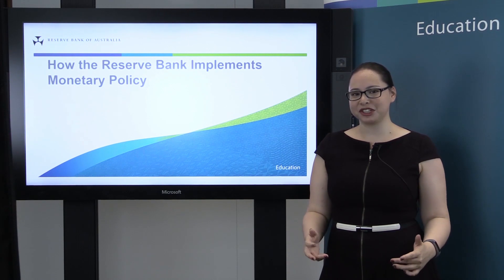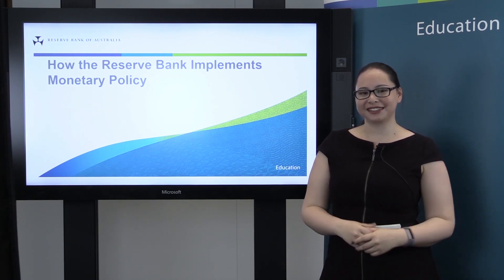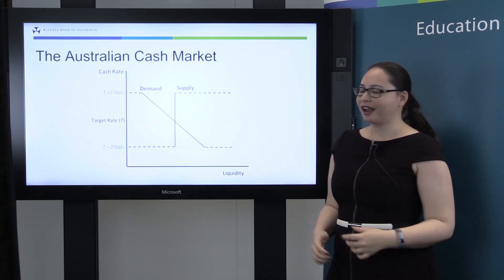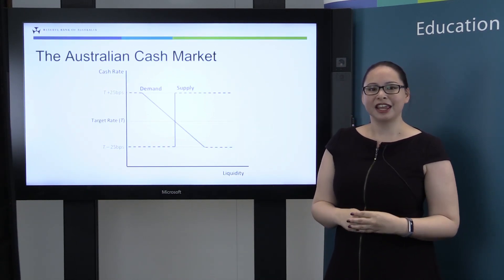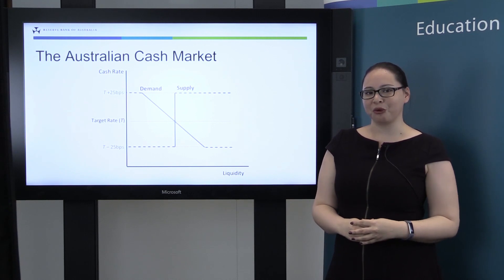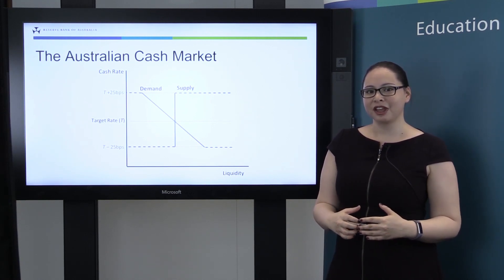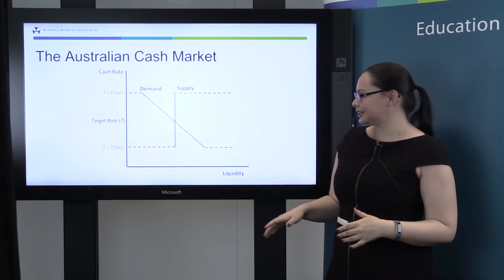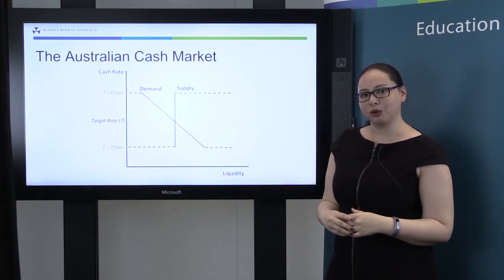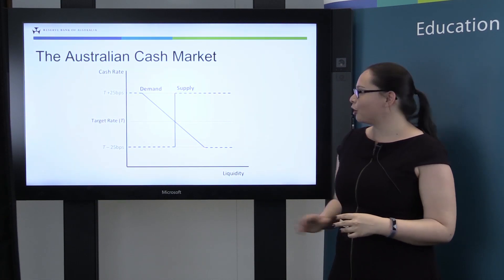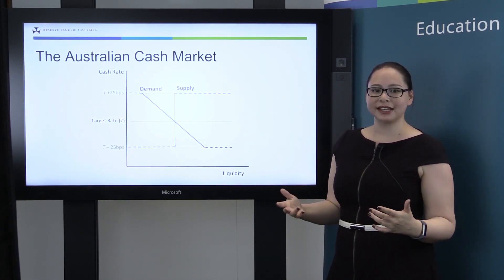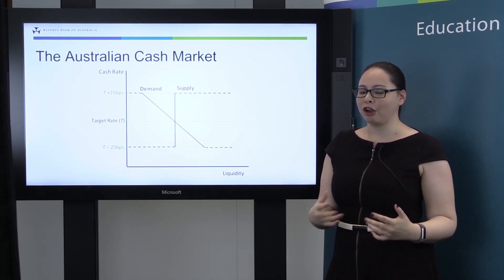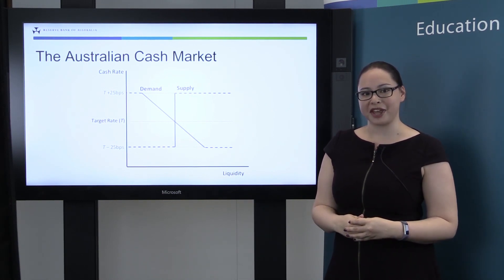I think this is something which isn't widely understood, so I'm really excited to have the opportunity to discuss this with you. The best place to start is with this standard textbook model for the Australian cash market. This is a stylised demand and supply diagram for a corridor system. On the x-axis we have the amount of cash or liquidity which is available, and on the vertical axis we have the price — in this case the cash rate, or the interest rate paid on overnight unsecured loans between banks.